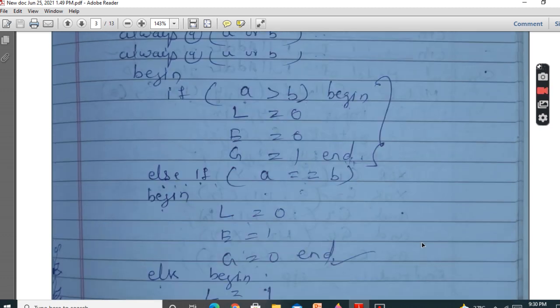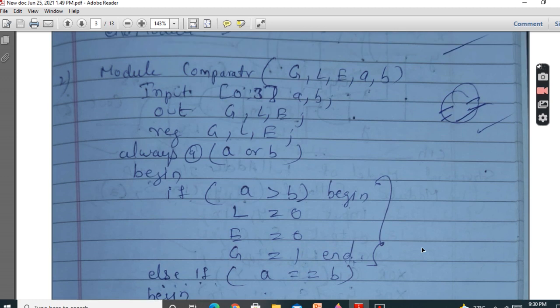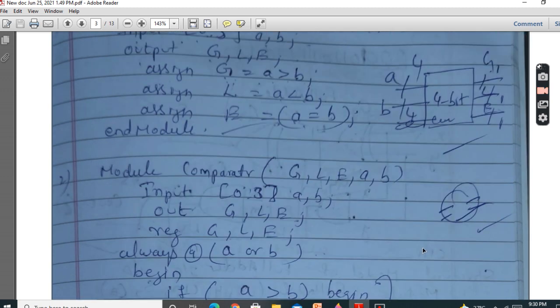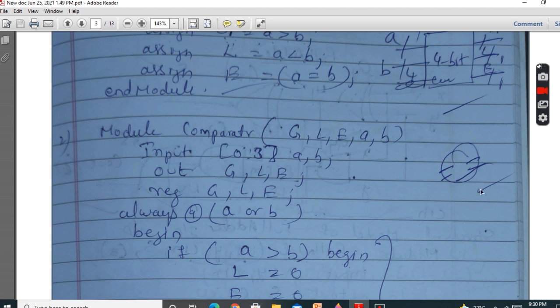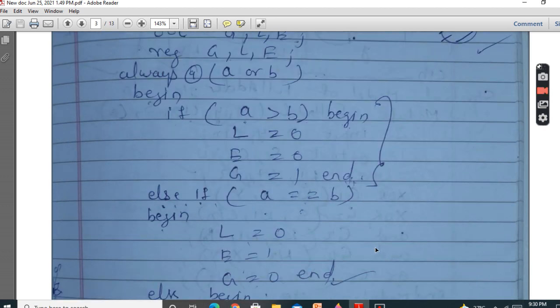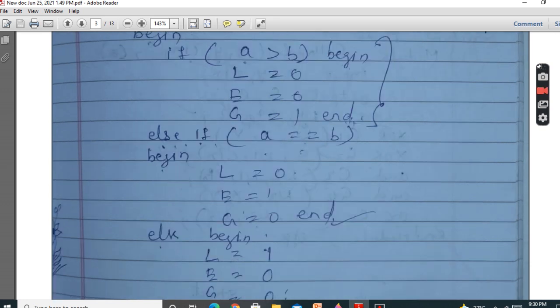You can write this using gate primitives also. But if you want to write it in gate primitives, you have to know the structure, internal blocks, which gates may be used. So the logic diagram if you know, you have to map accordingly. So that's all in this video. Please like, share and subscribe to my channel. Thank you for watching.